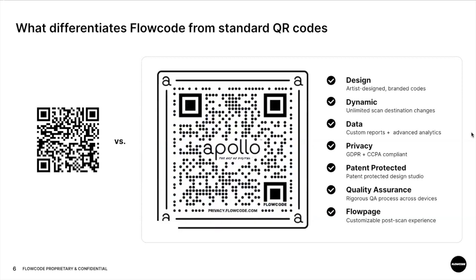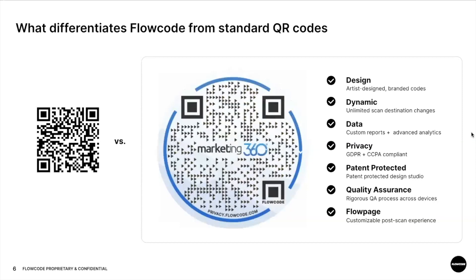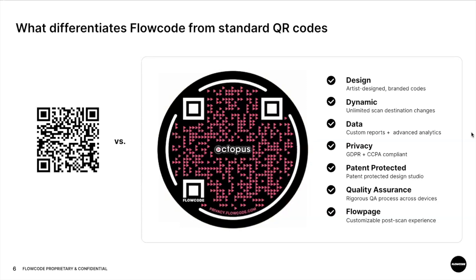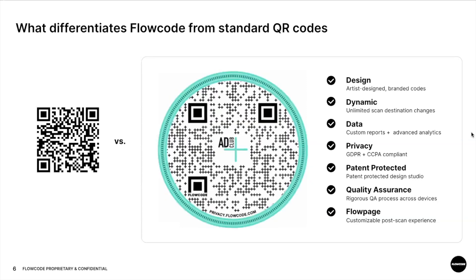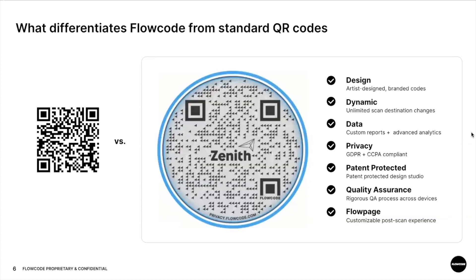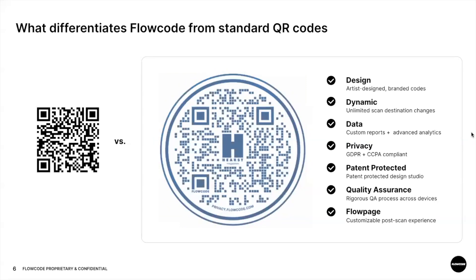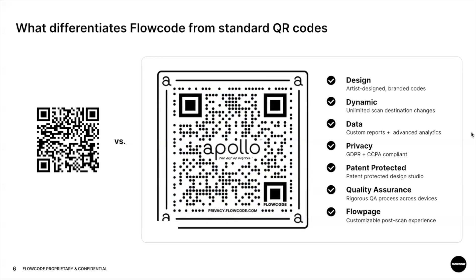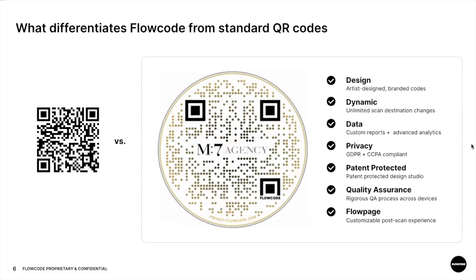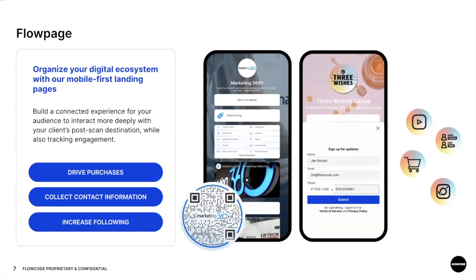All of our FlowCodes are backed by real-time data and analytics. We do not collect any personally identifiable information at the point of scan — we are GDPR and CCPA compliant. There is a level of assurance when you are scanning a FlowCode. They are also patent-protected and go through a rigorous quality assurance process, so when pushed into the real world you are assured they will scan easily and are trackable.